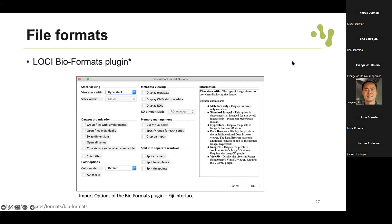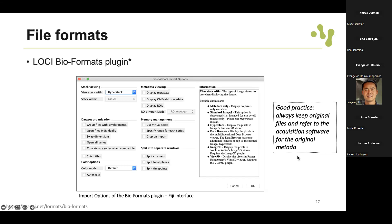If you're working in Fiji - and I mention it often because we'll work with it during the workshop and it's one of the most used softwares for image analysis - Fiji has the Bio-Formats plugin which can be used to read all these different file formats. Bio-Formats is not only for Fiji; you can find it for Python and MATLAB as well. A good practice is to always keep the original files and refer to the acquisition software for the original metadata.